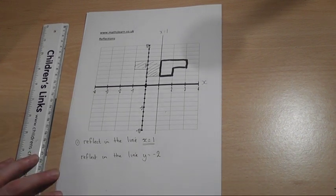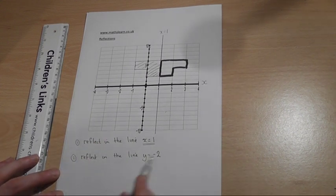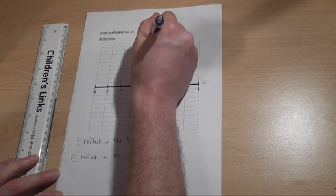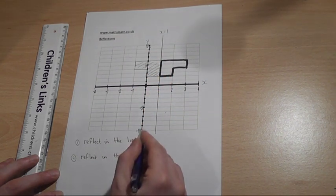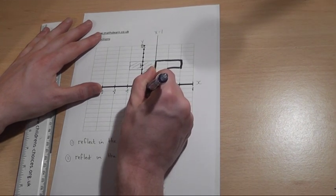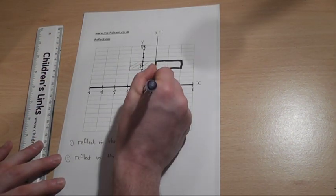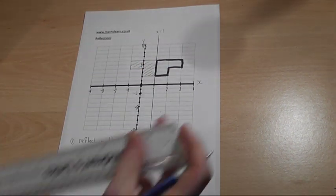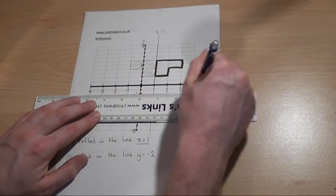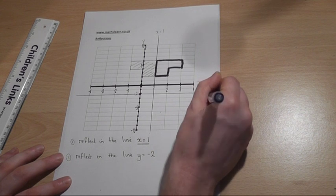The second example asks for a reflection in the line y equals minus 2. Now, this here is our y-axis. And if I count down, I get down to y equals minus 2 on the negative part of the y-axis. So here y equals minus 2. So if I draw a horizontal line through that point, then I produce the line y equals minus 2.